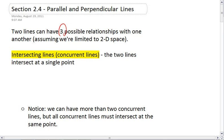So assuming that we're drawing these lines on a piece of paper, there are three distinct ways that these lines can be arranged in relationship to one another.